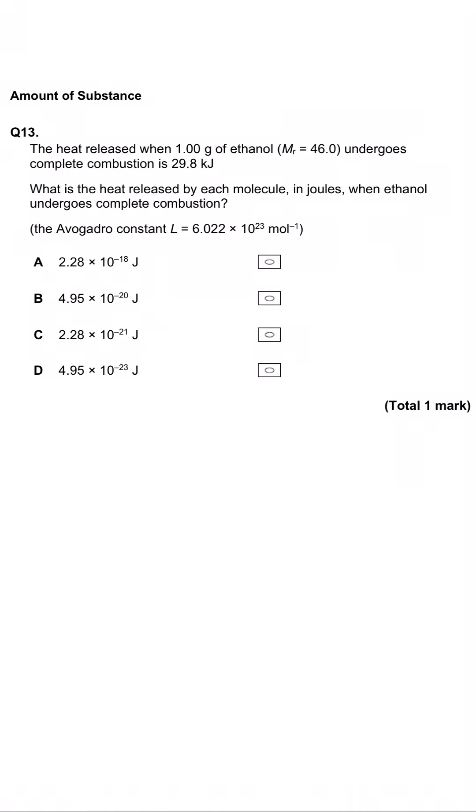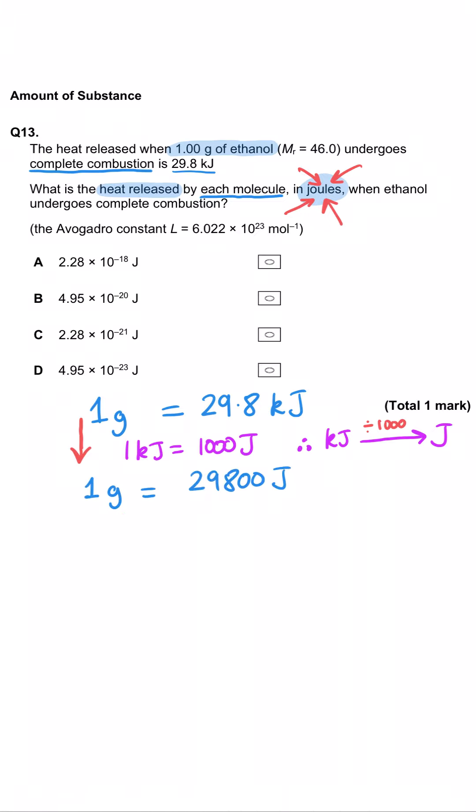This question tells us that the heat released when 1 gram of ethanol undergoes complete combustion is 29.8 kilojoules. We've been asked what the heat energy released per molecule in joules is. First of all, the heat energy needs to be in joules. Let's turn 29.8 kilojoules into joules, so 29,800.